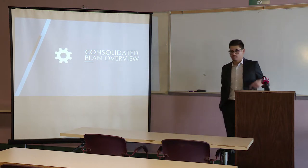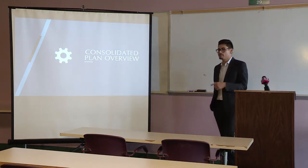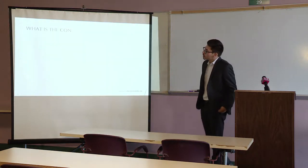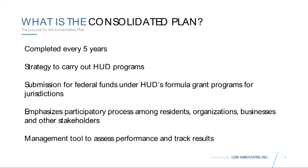The consolidated plan is a framework developed to assist the city in determining its goals for the next five years. It is completed every five years and provides a strategy for housing and community development needs. Once developed, we submit that document to HUD — the Department of Housing and Urban Development — which is the federal government branch that provides the city its grants.